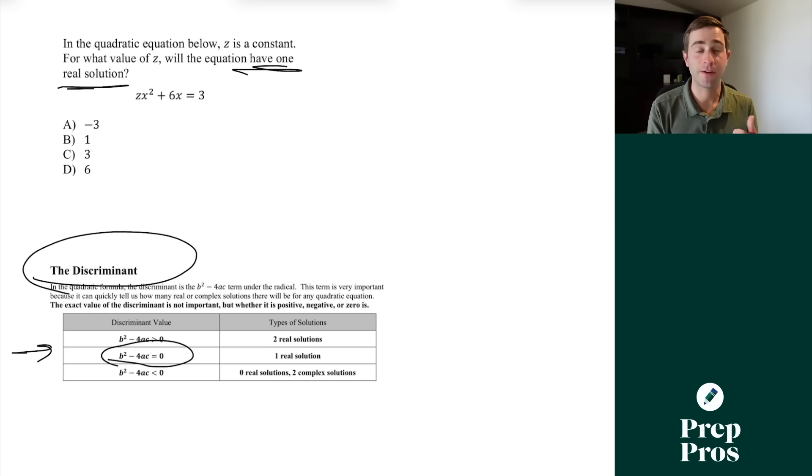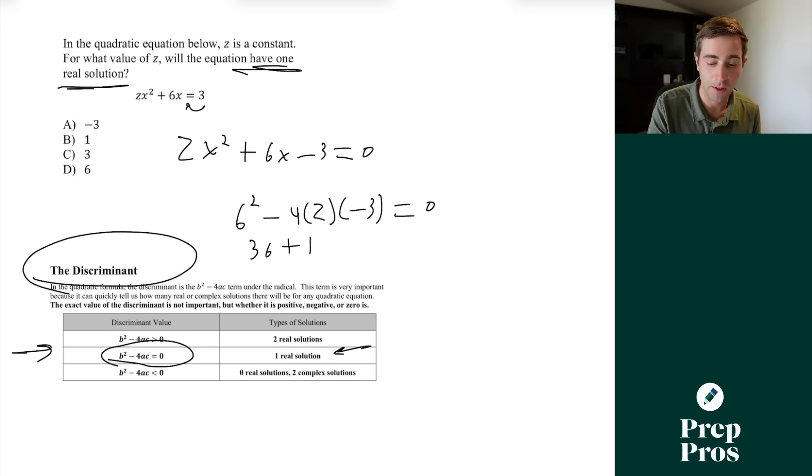So we always need to identify our a, b, and c values and have the equation set equal to zero. So we're going to subtract over the three. That will give us zx squared plus 6x minus 3 is equal to zero. So our a value is z, our b value is 6, and our c value is negative 3. So we're now simply going to do 6 squared minus 4 times a times c times z times negative 3. And here it's going to be equal to zero because that's what we use for one real solution. This will give us 36 minus, excuse me, 12 plus 12z is equal to zero. We can subtract over the 36. We'll get 12z equals negative 36. That will give us that z is equal to negative 3. And that will give us our correct answer of a.